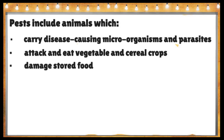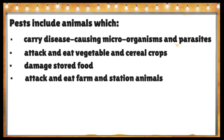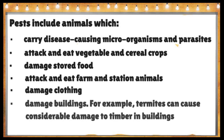Pests also attack and eat vegetable and cereal crops — for example, caterpillars and grasshoppers — damage stored food like cockroaches, attack and eat farm and station animals, damage clothing, and damage buildings. For example, termites can cause considerable damage to timber in buildings. Pests also bite people, for example bed bugs.